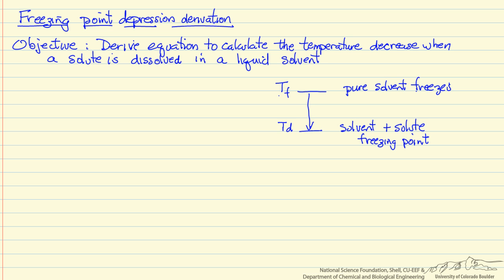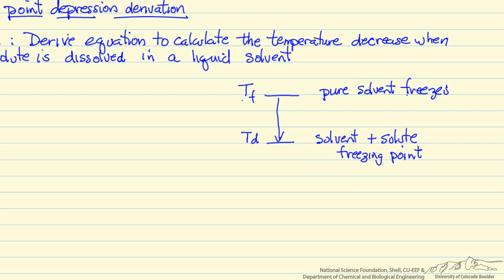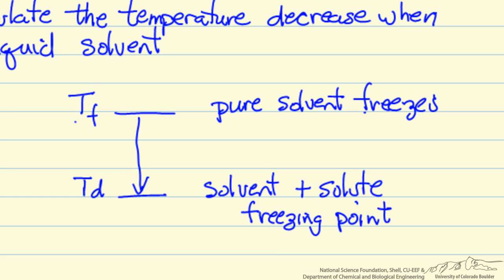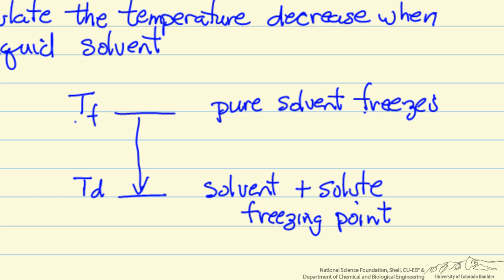In this video I'm going to derive the freezing point depression equation — the equation that allows us to calculate the temperature decrease when we add a solute to a pure solvent. The pure solvent freezes at temperature Tf, and when we add a solute the freezing temperature decreases, and we'll refer to that lower temperature as Td.